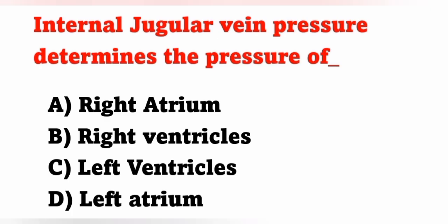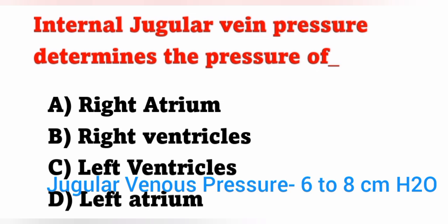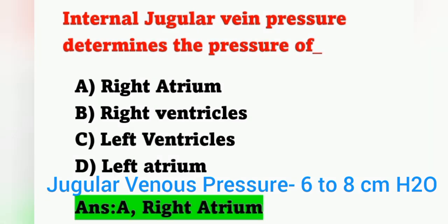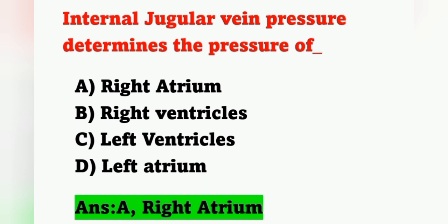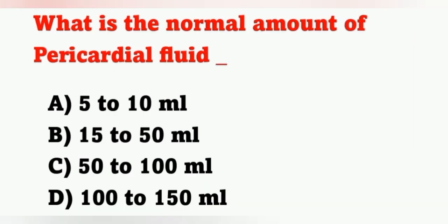Next question: internal jugular vein pressure determines the pressure of which chamber? Options: A) Right atrium, B) Right ventricle, C) Left ventricle, D) Left atrium. Internal jugular vein pressure determines the pressure of the right atrium. Option A is the correct answer. Normal jugular vein pressure is 6 to 8 centimeters of water.